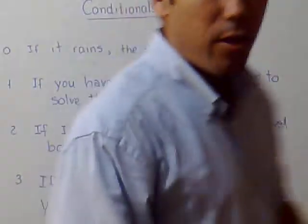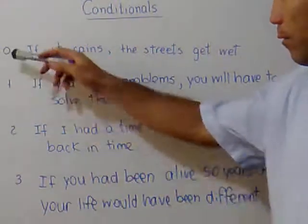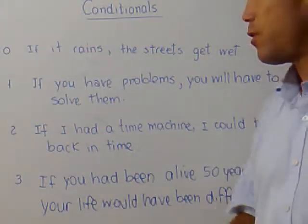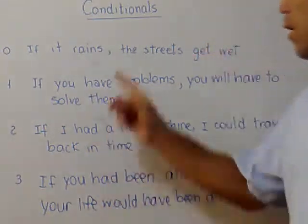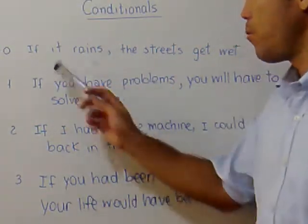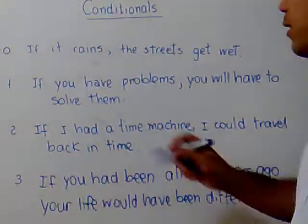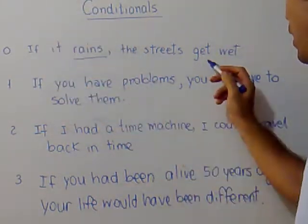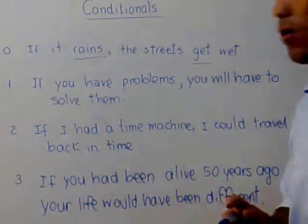Hi guys, today's topic is the conditionals. We have three conditionals plus the zero conditional, which is not a conditional itself, because it refers to general truth. So here we have: if it rains, the streets get wet. I choose present in the condition clause and present in the consequence clause.